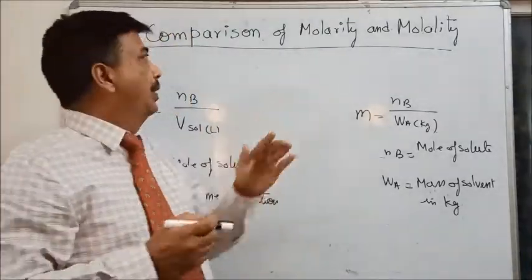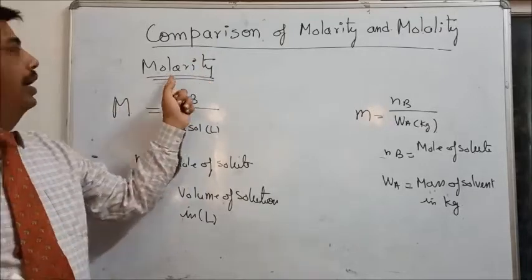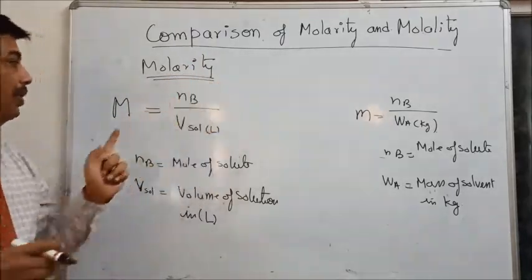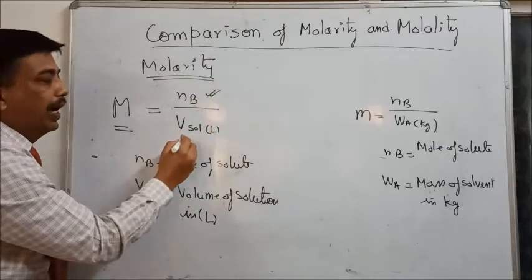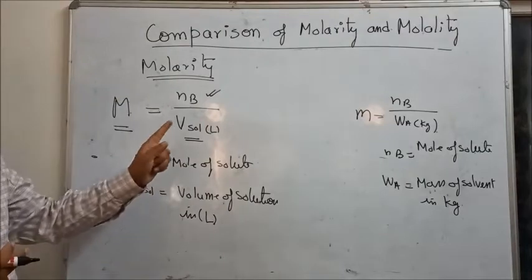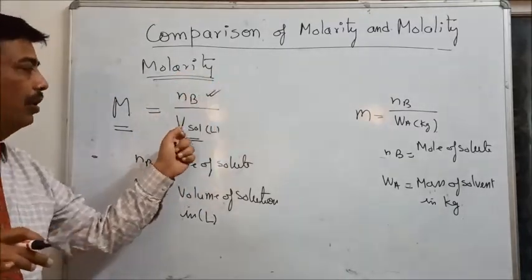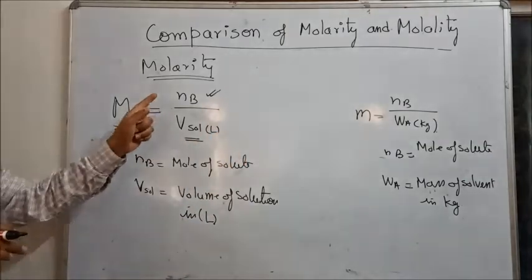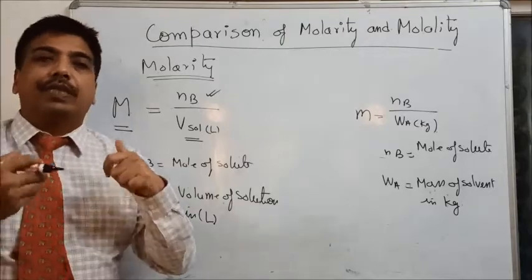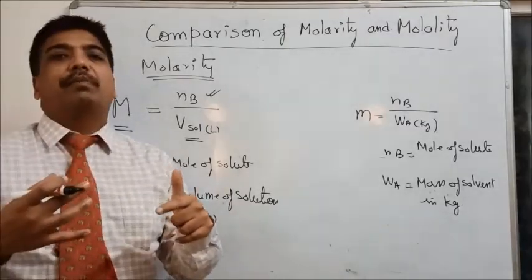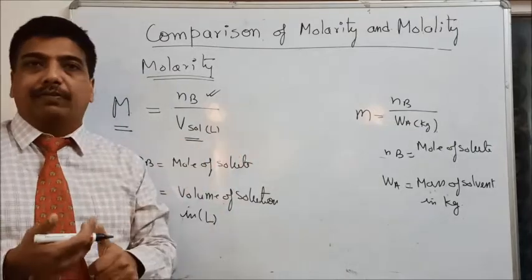The first thing we are taking is molarity. Molarity has capital M as its symbol. It is the number of moles of solute divided by the volume of solution in liters. Here nB is moles of solute and V solution is the volume of solution, which must be in liters. If it is given in milliliters, we divide by 1000 to convert it to liters.